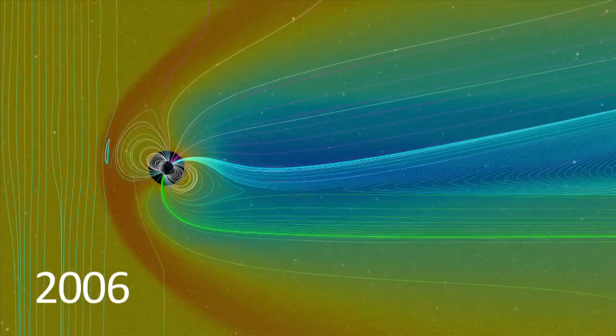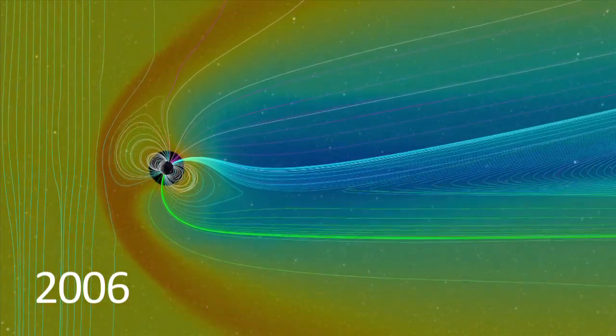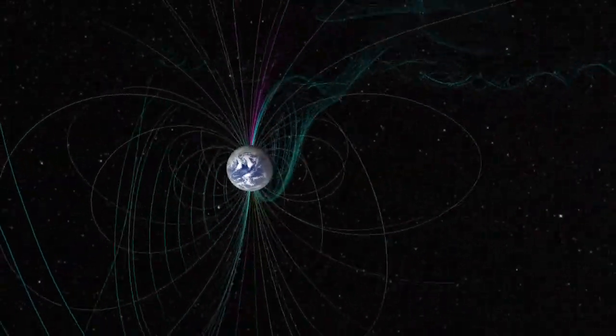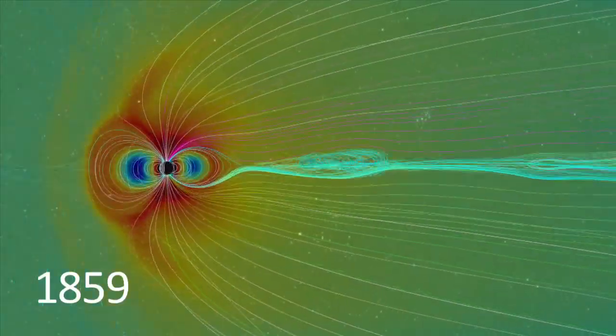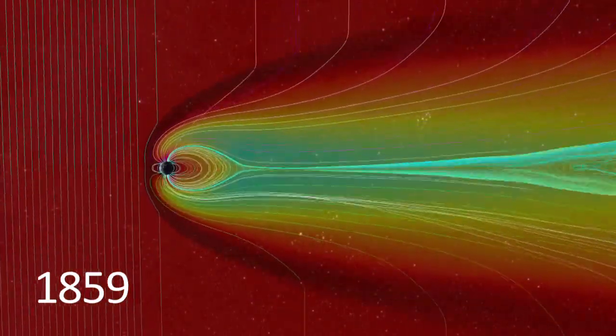In this example, a CME launched by an X3 flare from December 2006. But what would happen in the case of a more intense event, such as the Carrington event of 1859?